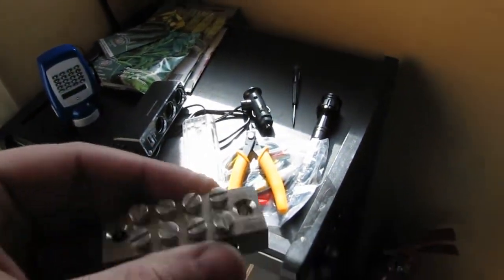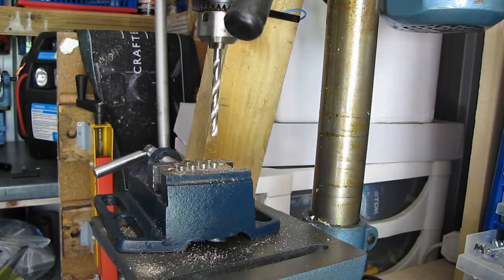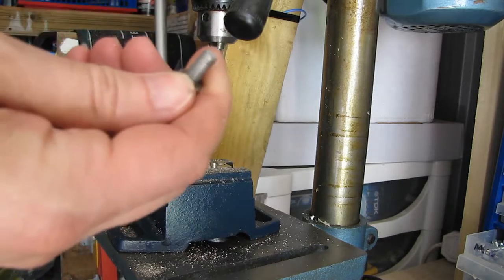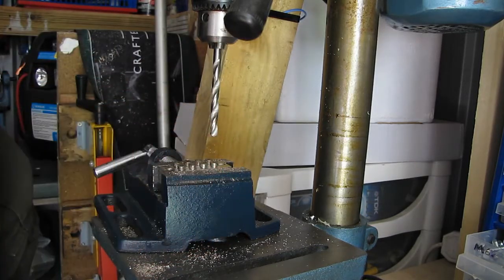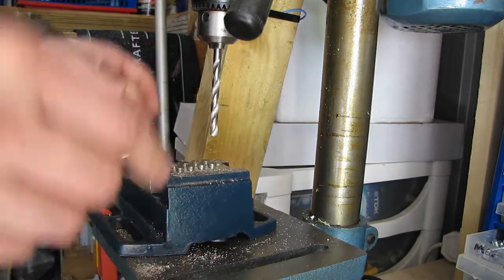So I'm going to be drilling these out. I found the bolt is a 6mm bolt, a 6mm drill bit, so I'm just going to drill straight through it and make the hole a little bit bigger.